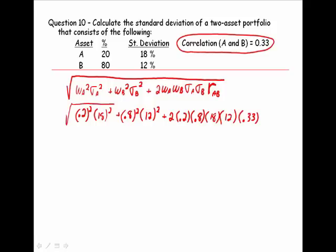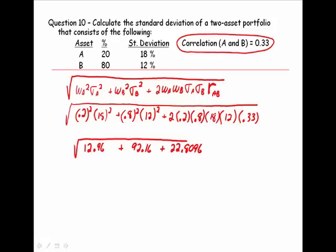Taking the square root, this gives me 12.96 plus 92.16 plus 22.8096, which equals the square root of 127.93, or 11.31 percent.